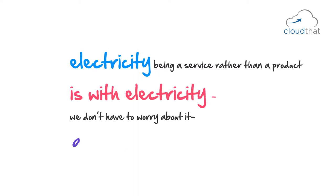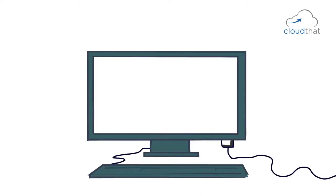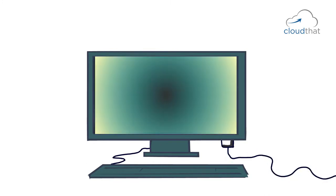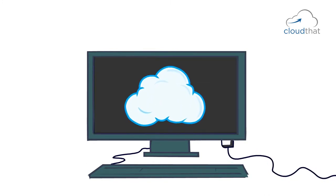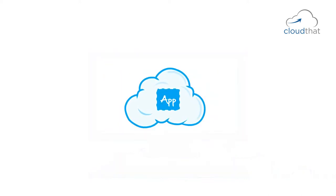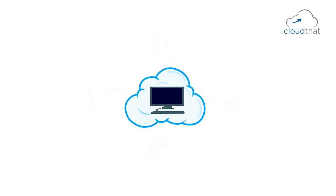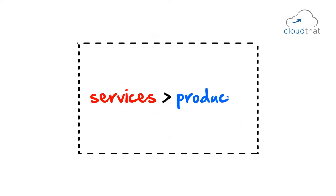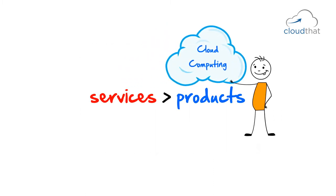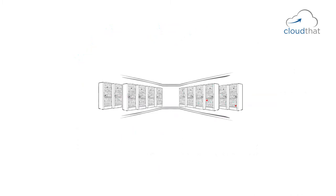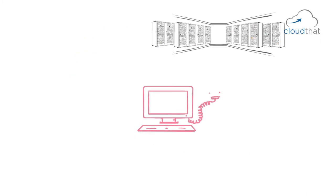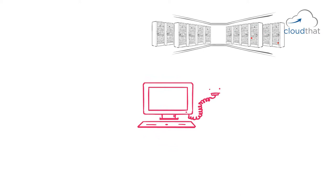Another advantage of electricity being a service rather than a product is that we don't have to worry about it as long as it's there. If you're watching this video, you are consuming electricity, but you don't notice it as long as it's up and running — you only notice if you lose it. Computing is something similar: your users don't care what hardware you're using as long as they get the service, but if the hardware goes down, that's when they notice. Cloud computing is trying to move computing from being a product to being a service. Time is not far away when we can get data centers the same way we get electricity — you just plug into a socket.